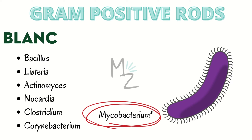Now let's talk about gram positive rods. The mnemonic is 'BLANC' — ending with C, which sometimes sounds like K. B is for Bacillus, L is for Listeria, A is for Actinomyces, N is for Nocardia, and C is for Clostridium and Corynebacterium. In some places, Mycobacterium is also included in gram positive rods.